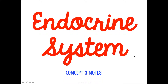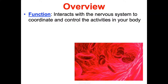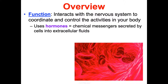This is concept three notes on the endocrine system. The overall function of the endocrine system is to interact with your nervous system and to coordinate and control the activities in your body. The main players here are hormones — the endocrine system is all about hormones.